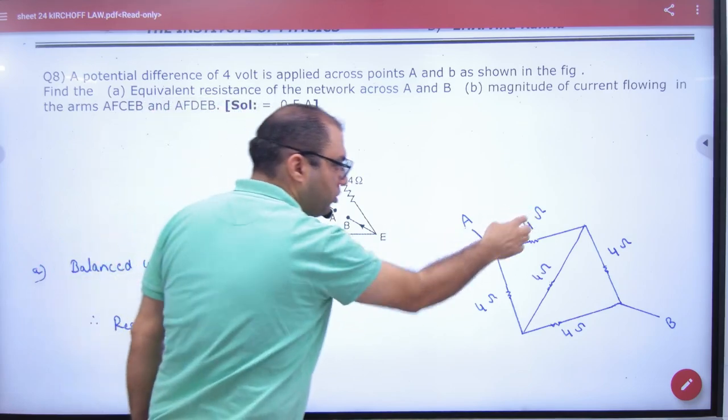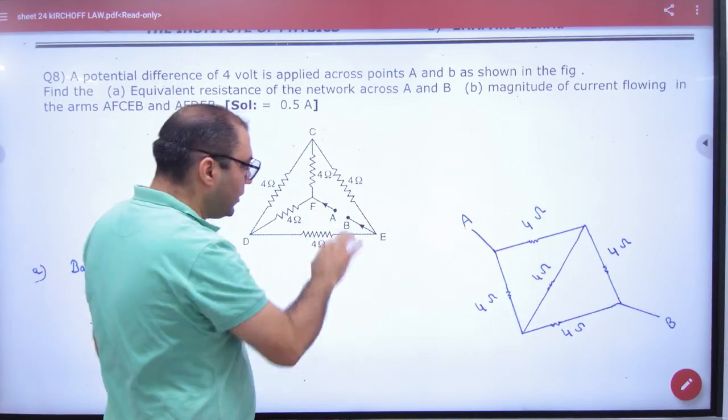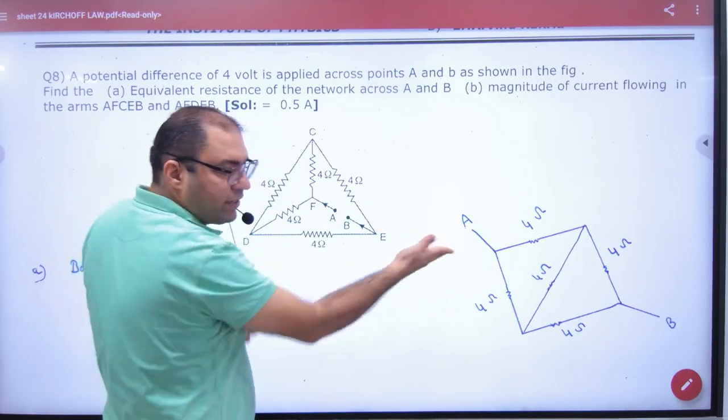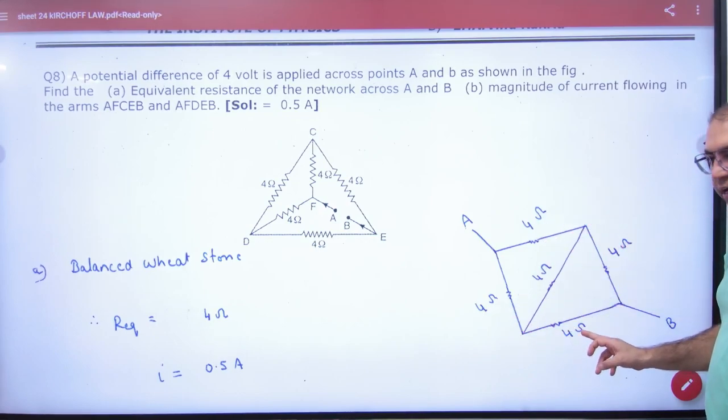4 and 4 here, 4 and 4 here, A point came out, B point came out. This is the Wheatstone Bridge. This is 4 by 4 is equal to 4 by 4.